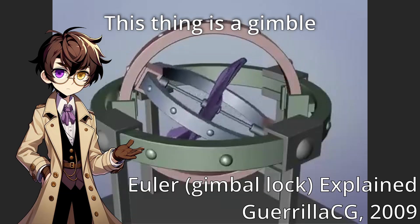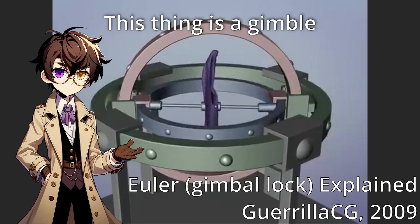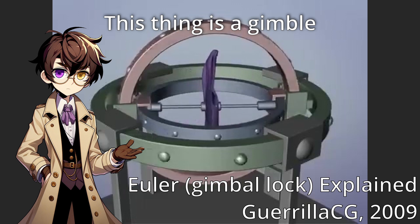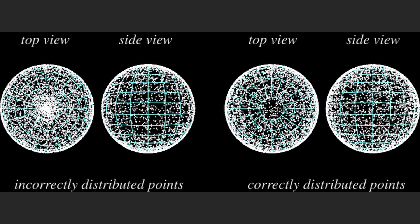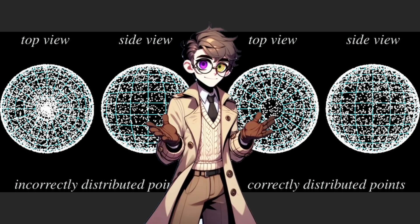Side note. Gimbal lock is basically when two of these inner rings line up. So when we rotate the inner or outermost ring, we end up manipulating the object in the exact same way. This phenomenon is also why when we create three random numbers for xyz rotations and use that to get a random point on the surface of a sphere, the point is not uniformly distributed. There are more points towards the poles because of gimbal lock.